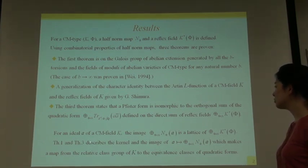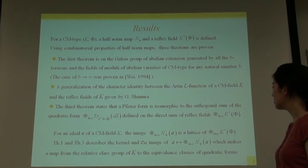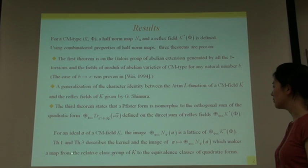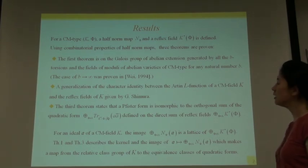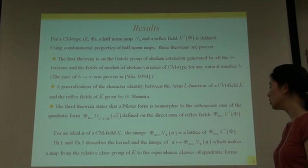Theorem 1 and Theorem 3 describe the kernel and the image of A to N-phi A, which makes a map from the relative class group of K to the equivalence classes of quadratic forms. This map is well known in the case of quadratic fields, so we investigated this map in the case of CM-fields.